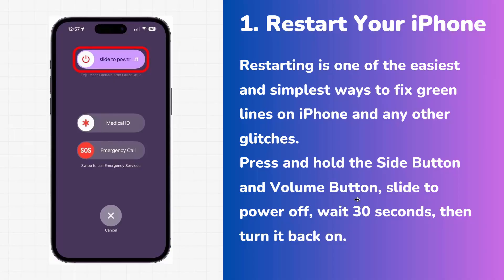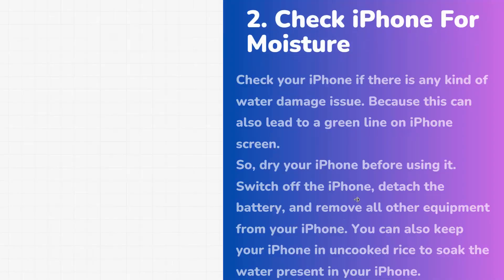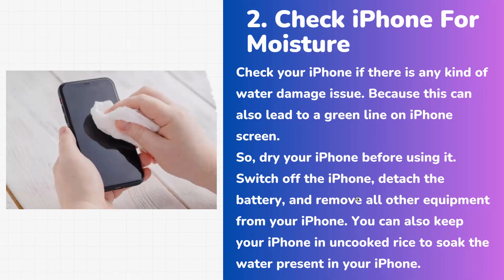If not, the next method is to check your iPhone for moisture. Water damage can also lead to green lines on the iPhone screen. Switch off the phone, detach the battery, and remove all other accessories. You can also keep your iPhone in uncooked rice to soak up any water present inside.